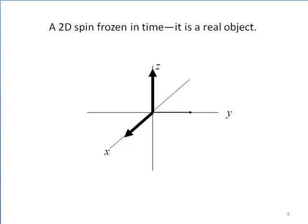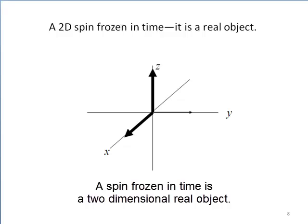So to start from the very basic assumption, a spin in the two-dimensional theory, frozen in time, at some instant, is assumed to look like this. It is a real object.